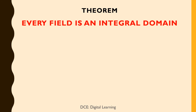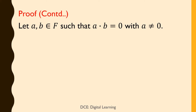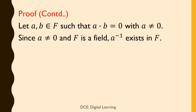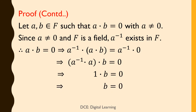Second theorem: Every field is an integral domain. Proof. Let F be a field. Then F is a commutative ring with unity and every non-zero element has a multiplicative inverse. To show that F is an integral domain, it is enough to show that F has no zero divisors. Let a, b belong to F such that a·b = 0 with a ≠ 0. Since a ≠ 0 and F is a field, a⁻¹ exists in F. Therefore, a·b = 0 implies a⁻¹·(a·b) = a⁻¹·0, which implies (a⁻¹·a)·b = 0, which implies 1·b = 0, which implies b = 0.